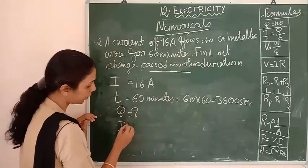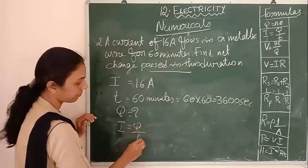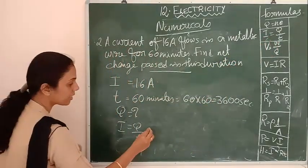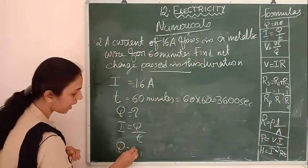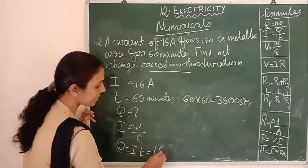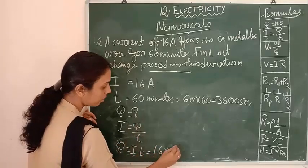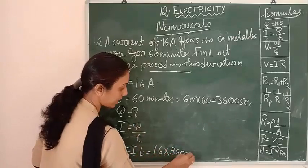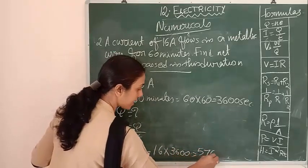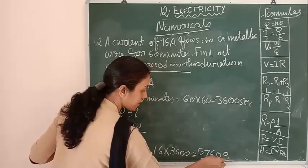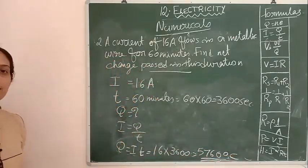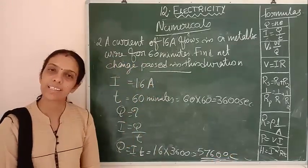I equals Q divided by T. So Q equals I into T. I is 16 ampere, T is 3600 seconds. So Q equals 16 into 3600. 16 into 36 is 576, so the answer is 57600 coulombs. This is very easy and you can easily solve this.